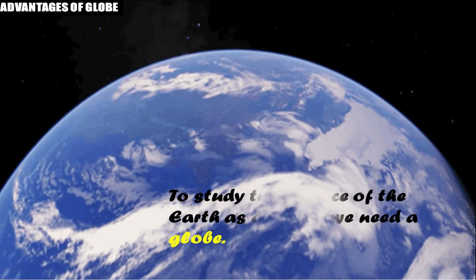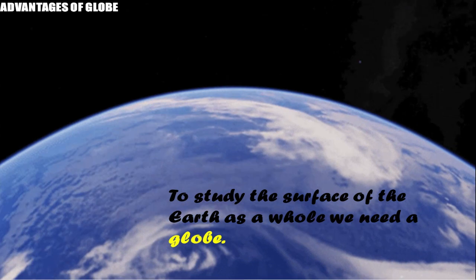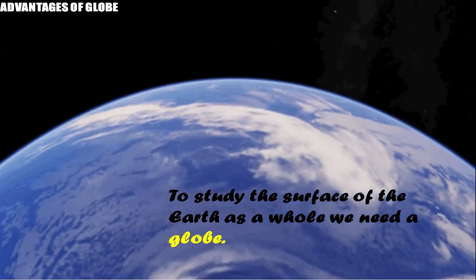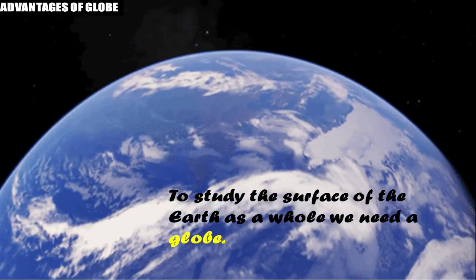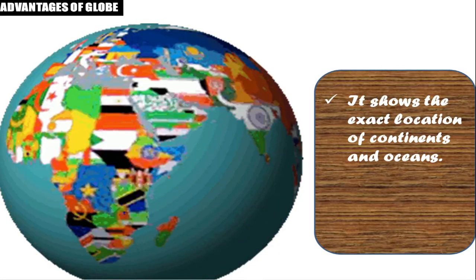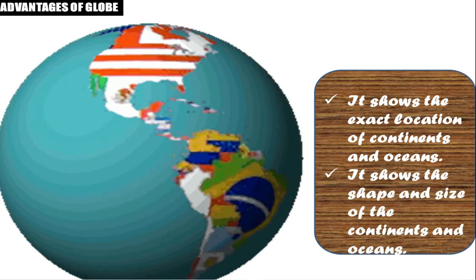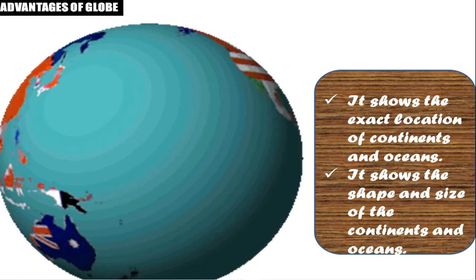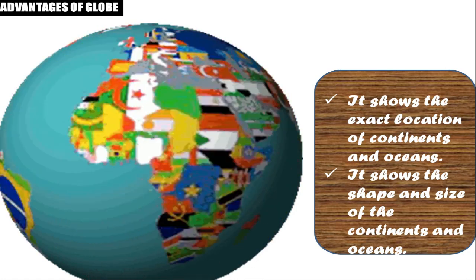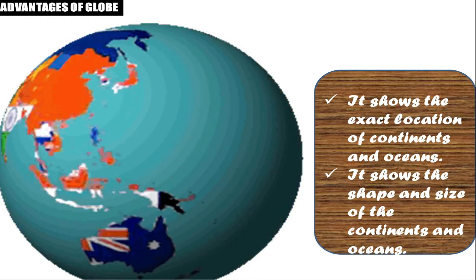If we want to study the surface of the earth as a whole, a globe helps us do that. A globe also shows the exact location of the continents and oceans, and gives us information about the exact shape and size of the continents and oceans. These are the advantages of the globe, but there are shortcomings too.